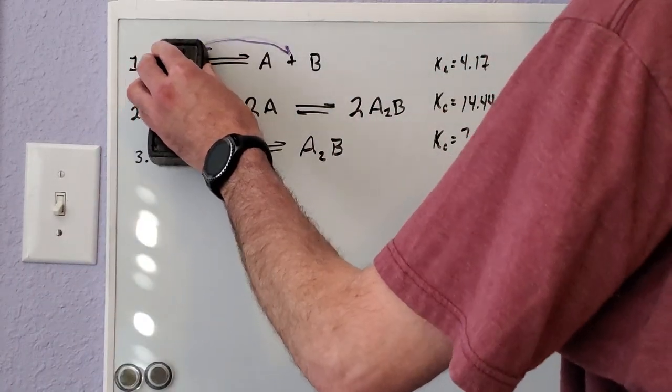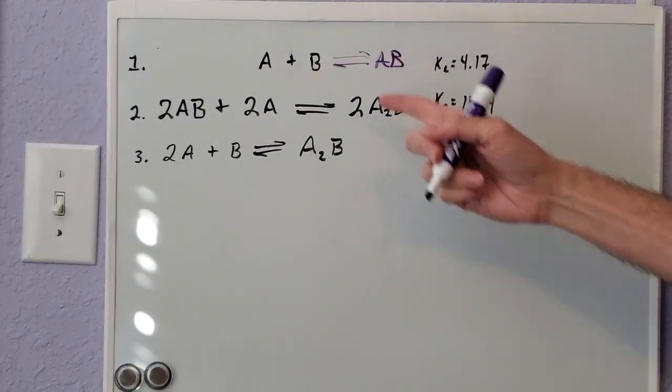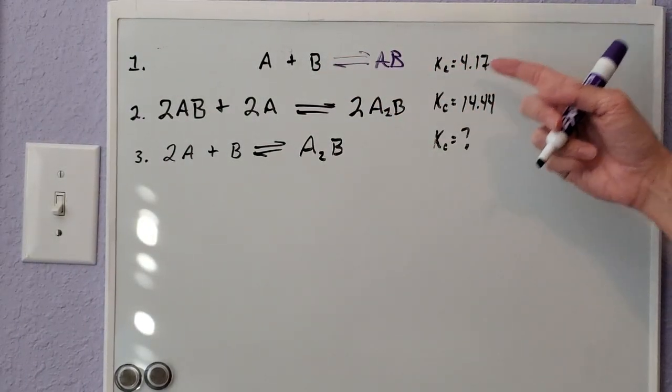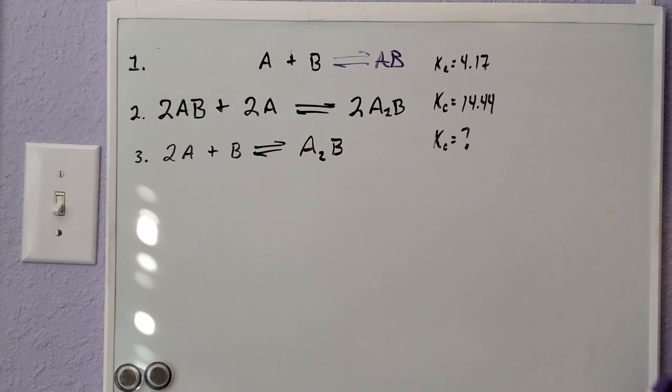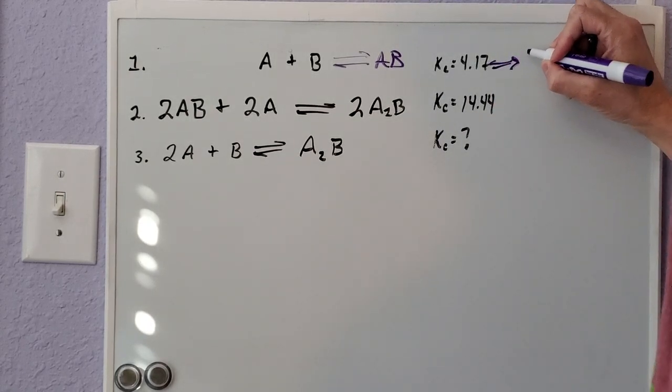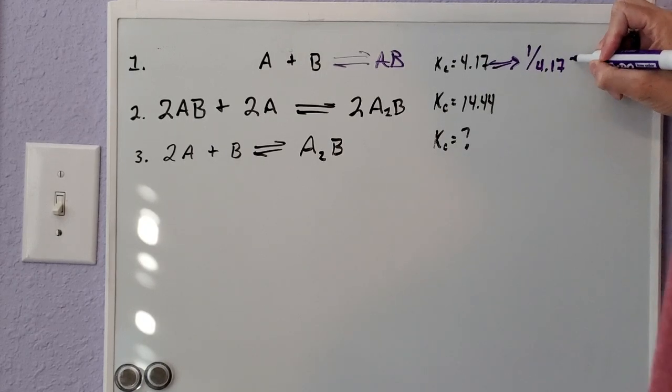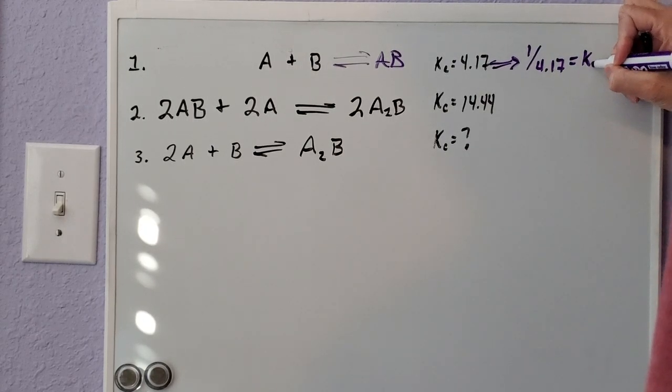Now that we reverse this, we can't just change the sign in front of this equilibrium constant. Now we're going to actually have to change this whole value into 1 over 4.17. That's going to be our brand new K, or brand new equilibrium constant for this equation the way it's written.